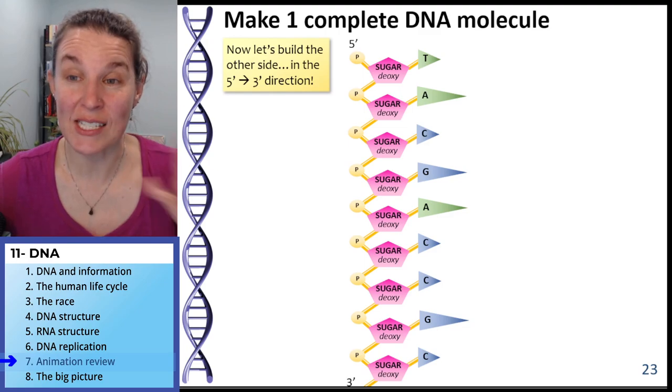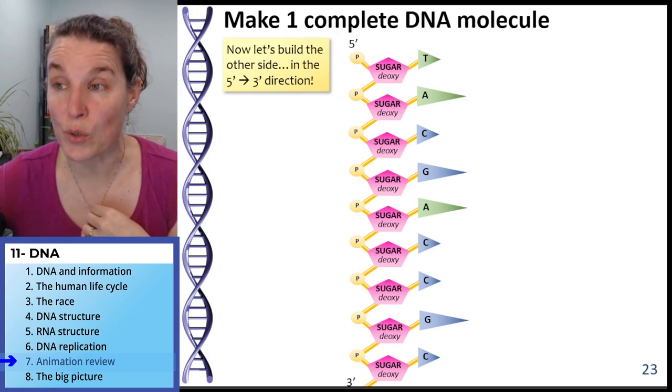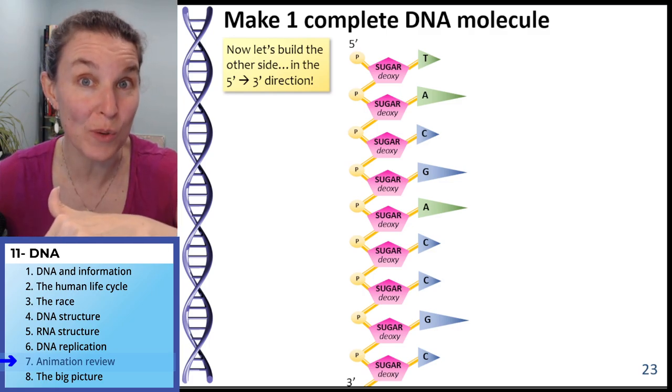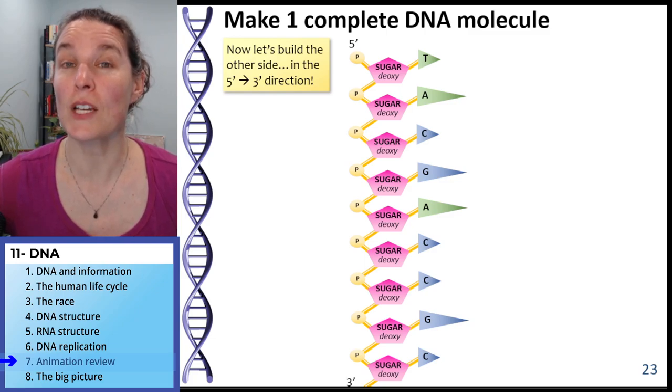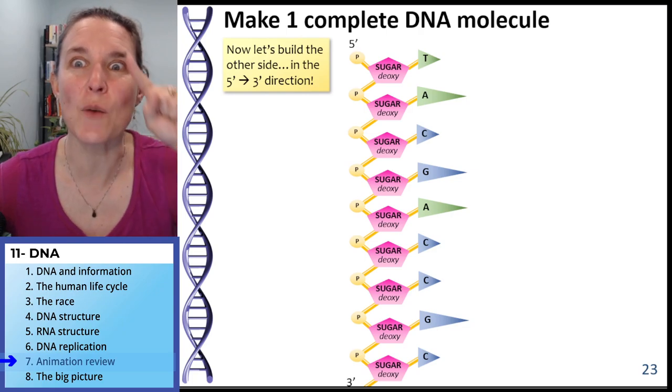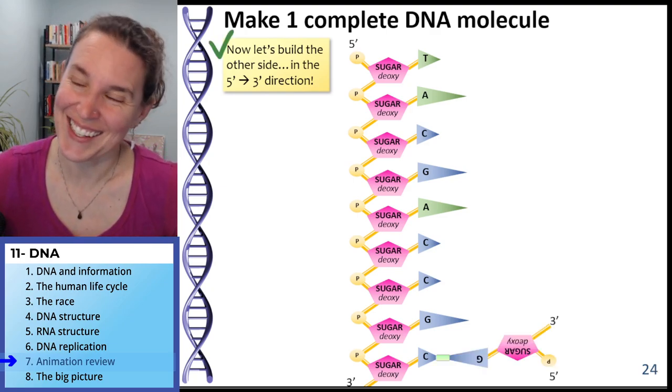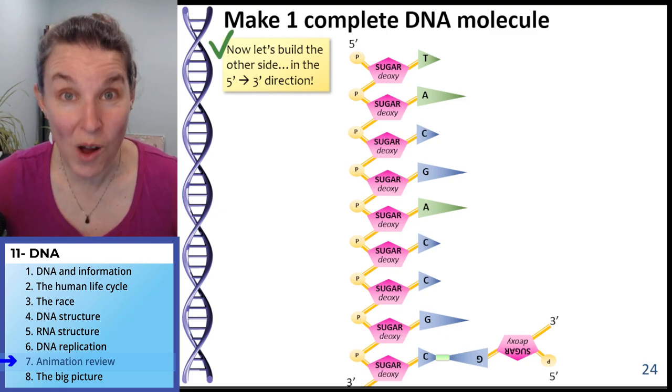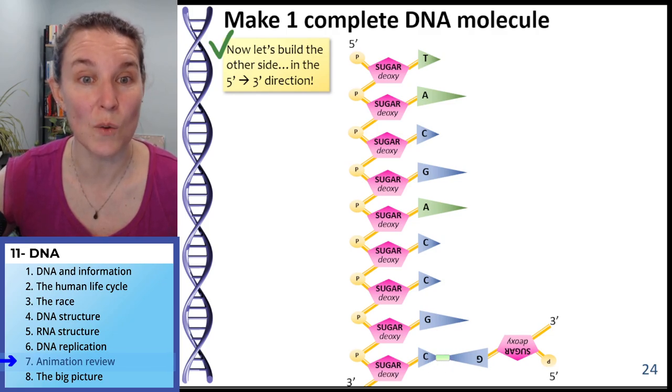Now we're going to build the other side of our single molecule. We've got our 5 prime end labeled and our 3 prime end labeled. What's going to be true of the other side? Do you agree that we just built that molecule in the 5 prime to 3 prime direction? Let's build the other side in the 5 prime to 3 prime direction. Predict where are we going to have our first molecule and what's it going to be? It's upside down because it is. Do you see how we have a guanine forming a bond with the cytosine? I've made a little hydrogen bond connecting them.